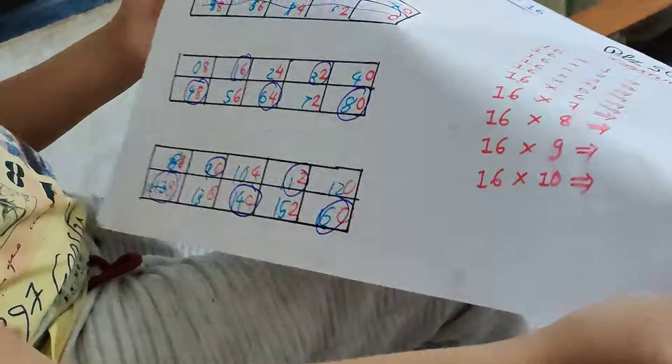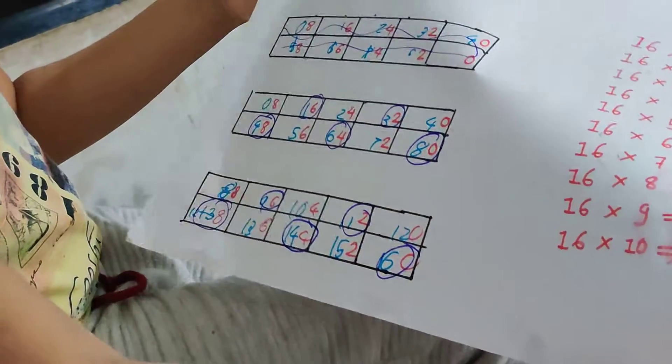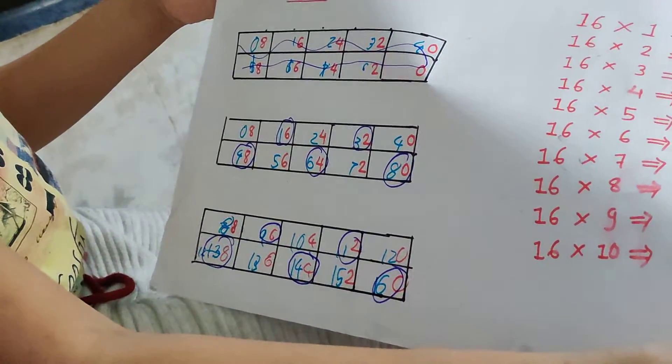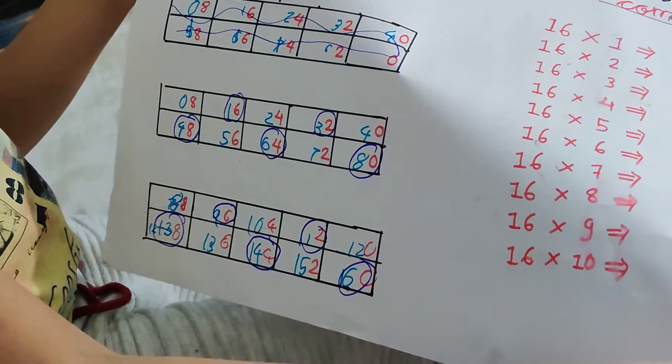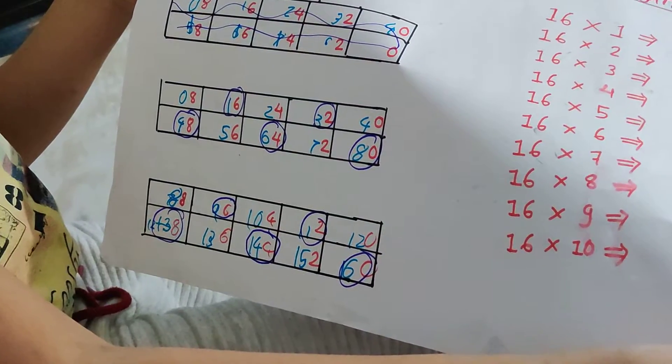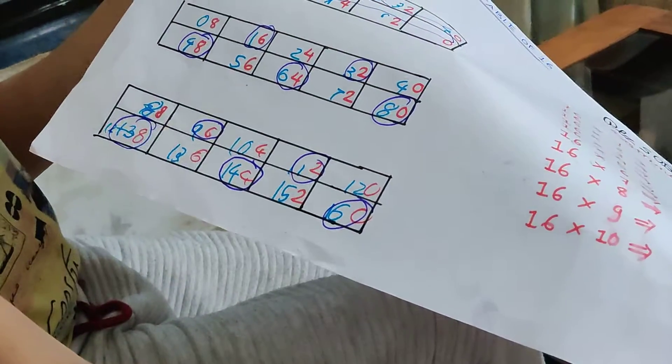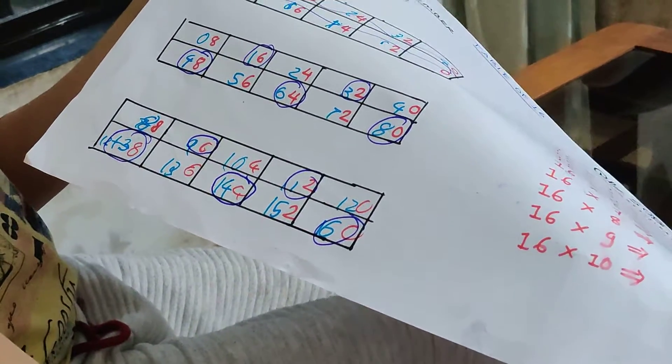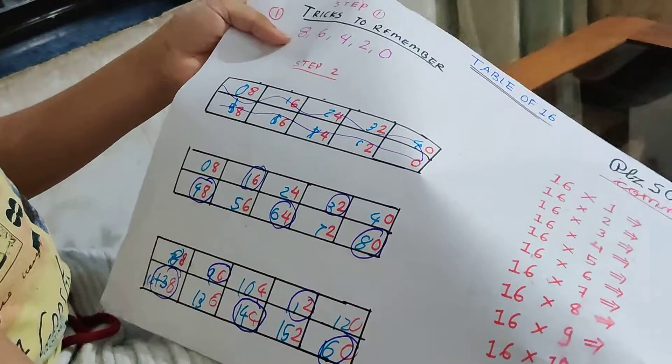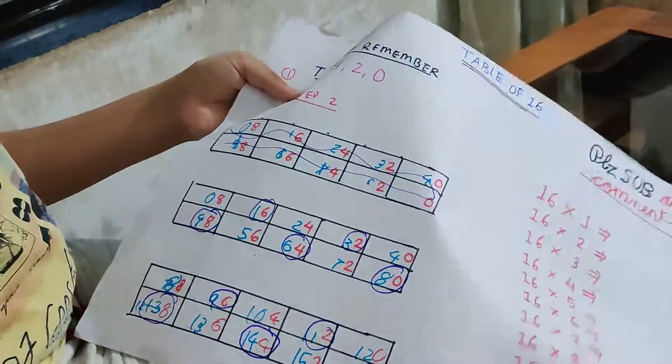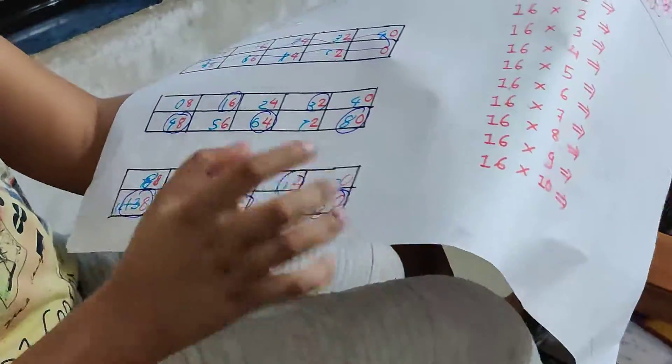And then write 8, 6, 4, 2, 0 again, 8, 6, 4, 2, 0, and then copy the second column of it, and then you get the 16 table. It's easy, it's just easy.